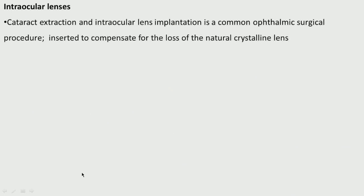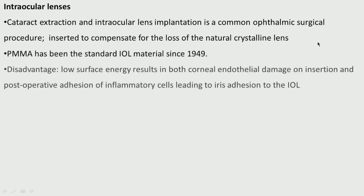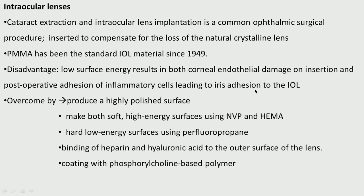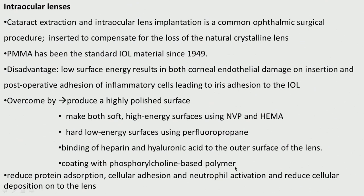Intraocular lenses are used after cataract extraction — it is an ophthalmic surgical procedure where a lens is inserted to compensate for the loss of the natural crystalline lens. PMMA has been the standard for a very long time. Low surface energy results in corneal endothelial damage on insertion and post-operative adhesion of inflammatory cells leading to iris addition to the IOL. To overcome this: a highly polished surface is produced; soft high-energy surfaces using N-vinylpyrrolidone and HEMA are used; hard low-energy surfaces using perfluoropropane; heparin and hyaluronic acid are bound to the outer surface; and coating with phosphorylcholine-based polymer is applied. The goals are to reduce protein absorption, cellular adhesion, neutrophil activation, and cellular deposition onto the lens.